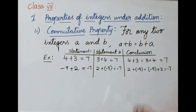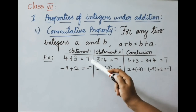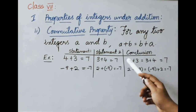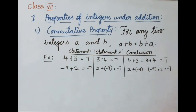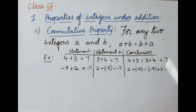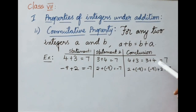Second one: commutative property under addition. For any two integers A and B, A plus B equals B plus A. Example: 4 plus 3 equals 7 — that is A plus B. Now B plus A: 3 plus 4 also equals 7. In both cases we got the same answer. Therefore 4 plus 3 equals 3 plus 4, both equal to 7.